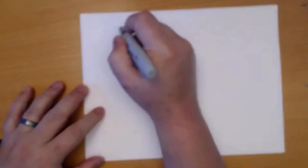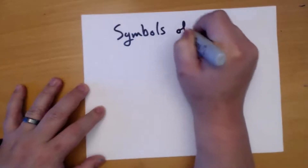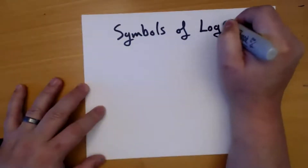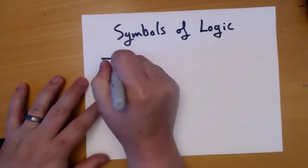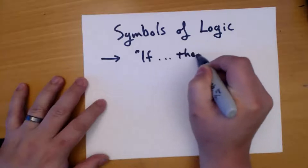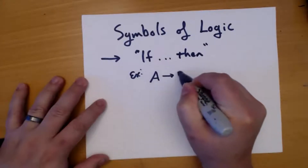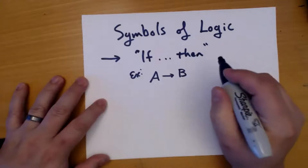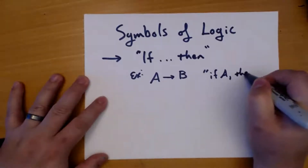So the symbols of logic — I need you to start copying this down. There are six symbols that we need to worry about. The first is an arrow, which means an if-then statement. For example, if I wrote A and then an arrow and then a B, I would be saying: if A, then B.